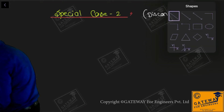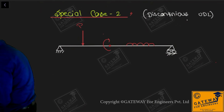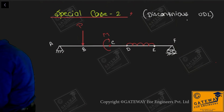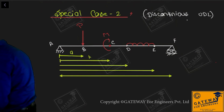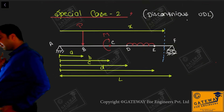There is a simply supported beam subjected to a point load P, a moment M, and a discontinuous UDL. Suppose the points are A, B, C, D, E, and F. Now let me tell the positions: A, B, C, D, and L. I am considering a section in the last portion at a distance of small x from A. I took the section in the last portion because I have taken x from left to right. You can also consider the first portion but then take the section from right to left.